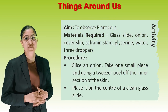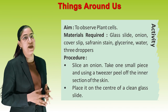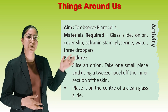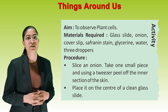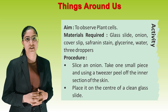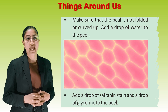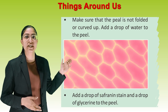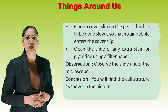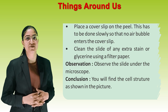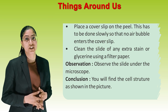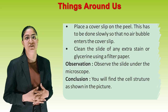Let's see an activity. Aim: To observe plant cells. Materials required: glass slide, onion, cover slip, safranin stain, glycerin, water, three droppers. Procedure: Slice an onion, take one small piece, and using a tweezer peel off the inner section of the skin. Place it on the center of a clean glass slide, making sure the peel is not folded or curved up. Add a drop of water, a drop of safranin stain, and a drop of glycerin to the peel. Place a cover slip slowly so that no air bubbles enter. Clean the slide of any extra stain or glycerin using a filter paper. Observe the slide under the microscope. Conclusion: You will find the cell structure as shown in the picture.